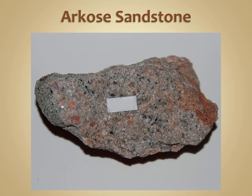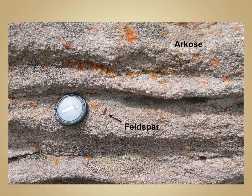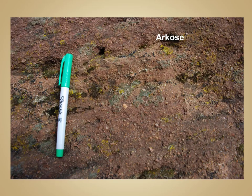Arkose sandstone, on the other hand, is a little more poorly sorted, meaning it contains coarser fragments that are not all of the same size, and is typically much more rich in feldspar — particularly potassium feldspar. Here in these photographs you can see a little bit more angular nature of these grain sizes, meaning that they have not been transported as far, as well as the slightly less well-sorted matrix.